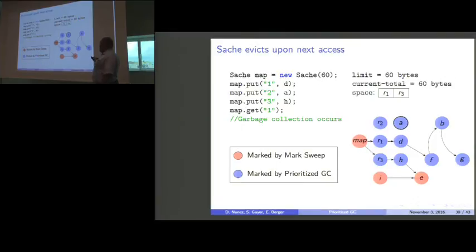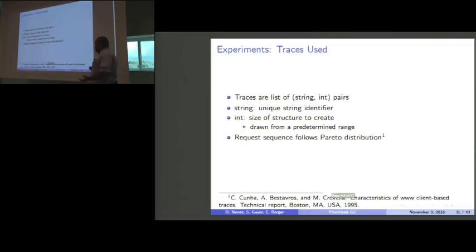Once our sweep is done, the sash will actually evict the reference R2 at its next access. That allows, on the next sweep, to actually clean up any leftover marked objects. That is the sash in a nutshell and how it uses prioritized GC. But, we want to see how well it does. To do that, we ran an experiment where we made a bunch of traces. These are just basic string integer pairs. The string is just some unique identifier. It's not very important. What matters is the number, which is the size of the structure we want to create in terms of bytes. We make sure that the sequence follows a Pareto distribution, mostly because Kuna et al found that web-based traces actually follow this distribution. We want to look at something as close to web traces as we can, while varying the size.